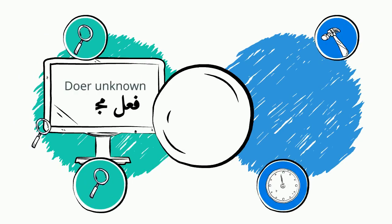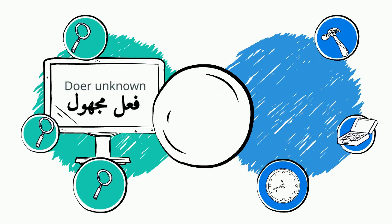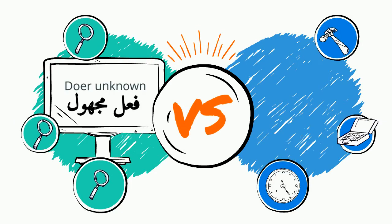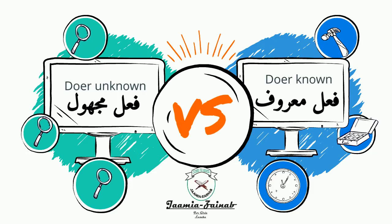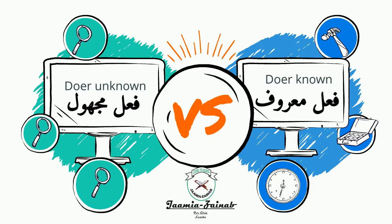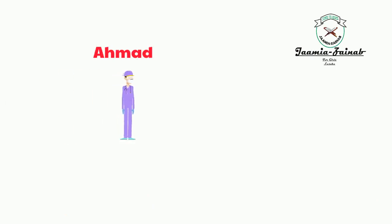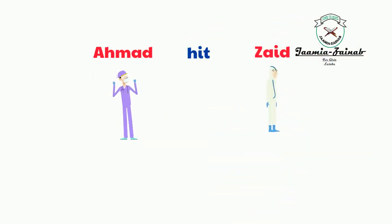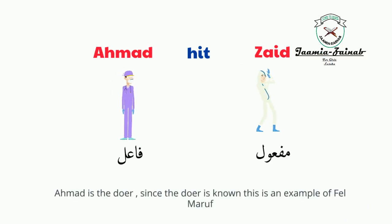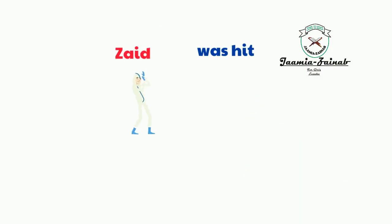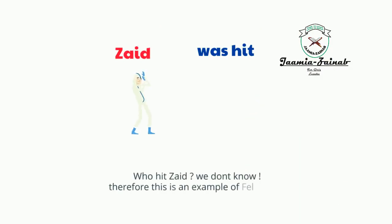Looking at the aspect of doer — the fa'il and maf'ul — you have two other types of verbs. In any verb, either the doer will be known or the doer will be unknown. If the doer is known, that verb is fi'l ma'roof. If the doer is unknown, that verb is fi'l maj'hul. For example: 'Ahmad hit Zayd' — Ahmad is the known doer, so this is fi'l ma'roof. 'Zayd was hit' — we don't know who hit Zayd, therefore this is fi'l maj'hul.